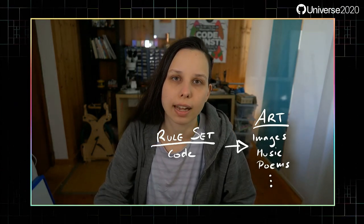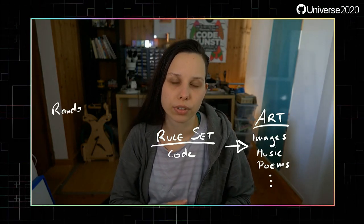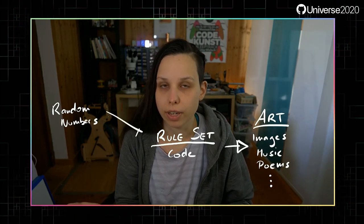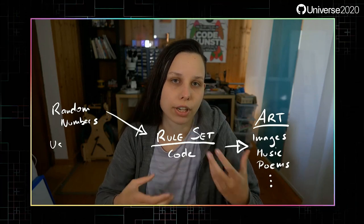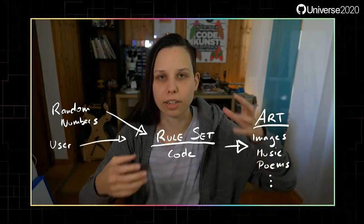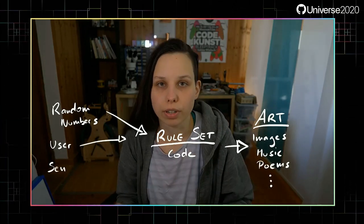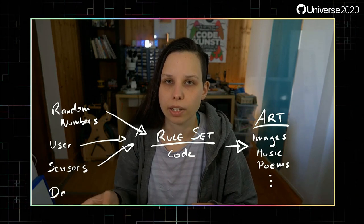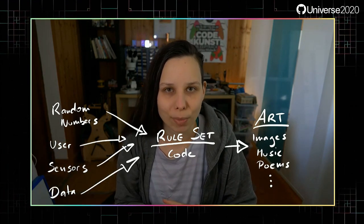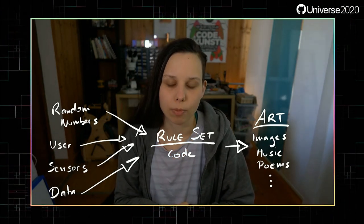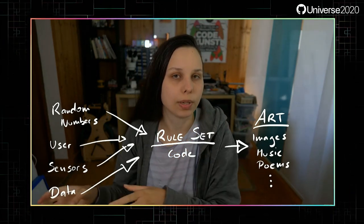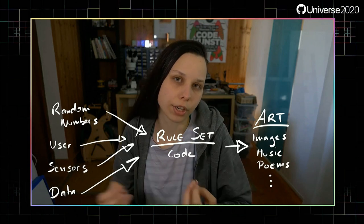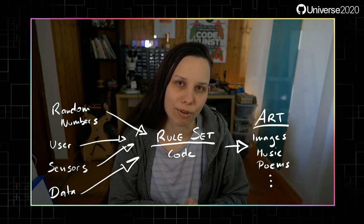There are different kinds of input types you can use — random numbers, for example. You can also make interactive generative art so that the user generates the input, for example with the Kinect to scan body pose. You can also use completely different sensors, like a water sensor in a plant. Or you can connect to large databases like Wikidata and use that to generate your art.